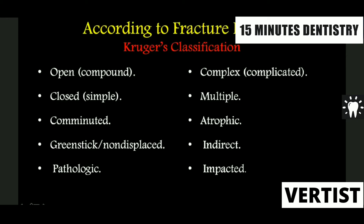Then it can be comminuted where there are more than two fragments. Greenstick fracture is where there is one cortex that is fractured — usually seen in children. Pathologic fractures result from any bony pathology where the bone has become very atrophied. Complex fractures involve multiple fractures where more than two bones are involved. Atrophied fractures are seen in the geriatric age group. Direct fractures: where there is a blow to the chin and the parasymphysis fractures on one side and the condyle on the other — that is called a contrecoup fracture. And lastly, impacted fractures, which I'll show in a subsequent slide, where it gets pushed upwards or the maxillary segment goes downwards.